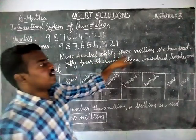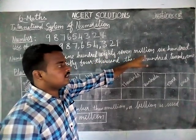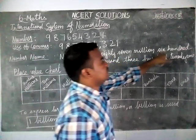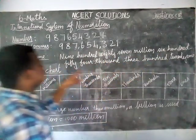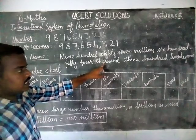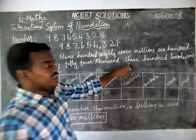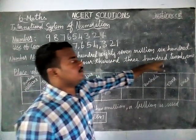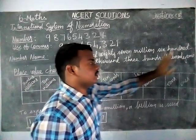So how do we read 987,654,321? It is read as: nine hundred ninety-seven million, six hundred fifty-four thousand, three hundred twenty-one.